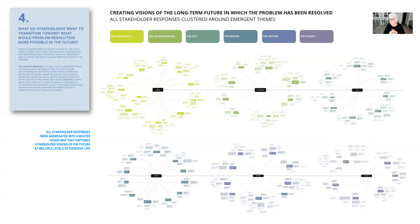The data gathered in this co-visioning step enables researchers to see where different stakeholder groups agree and disagree about the long-term future, which can in turn inform additional targeted research as well as systemic solutions. Like the problem map, responses from all four stakeholder groups were aggregated to form this vision map of all responses from all groups at the six different levels of scale.